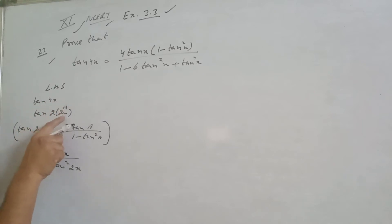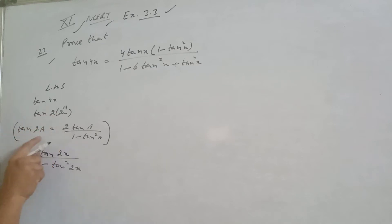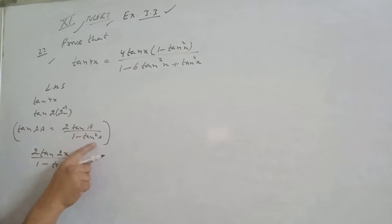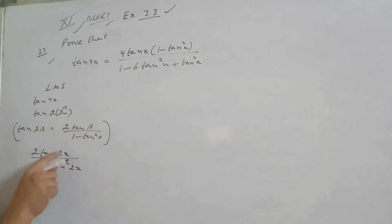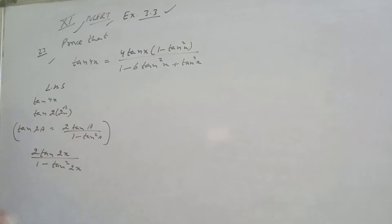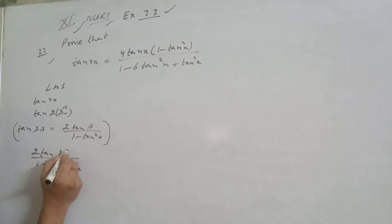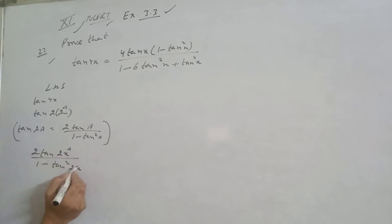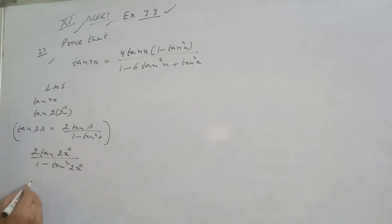What is the identity of tan 2a? It is 2 tan a upon 1 minus tan square a. Here a is 2x, upon 1 minus tan square a where a is 2x. Now again, this is tan 2a, and here a is x.